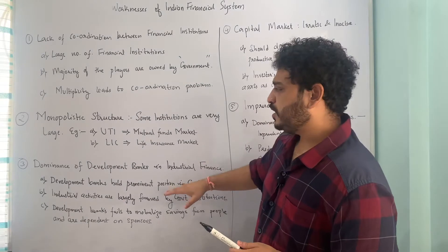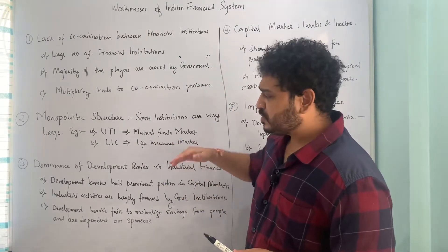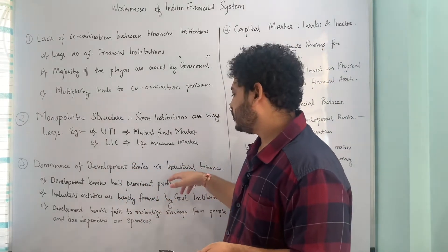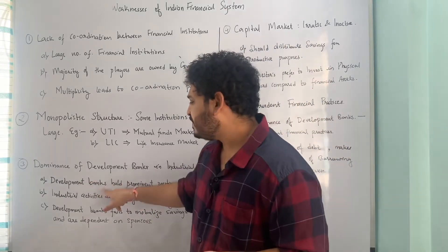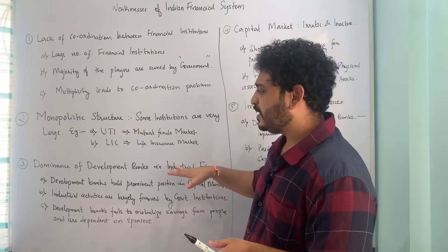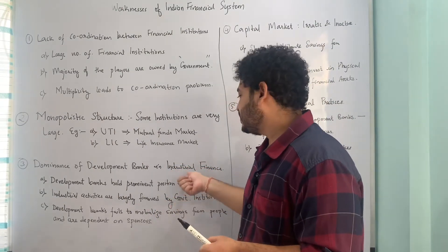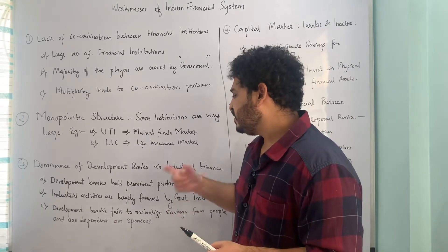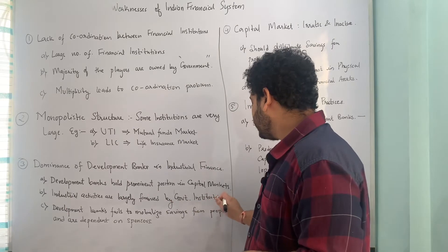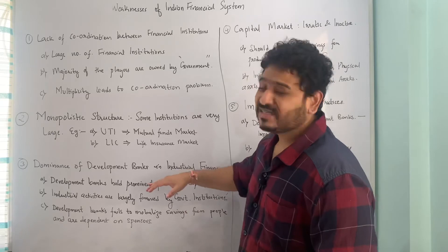The third point is dominance of development banks in industrial finance. Development banks hold a prominent position in capital markets and are extending finances for industrial activities. Industrial activities are largely financed by government institutions — development banks which are owned by the public sector — and that is why this is a significant problem.